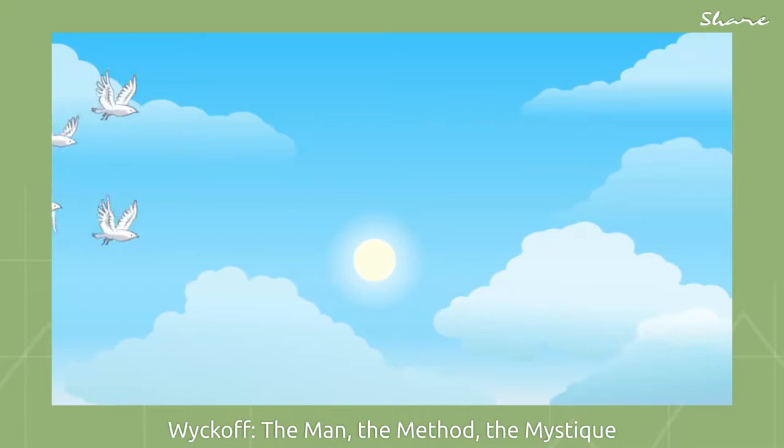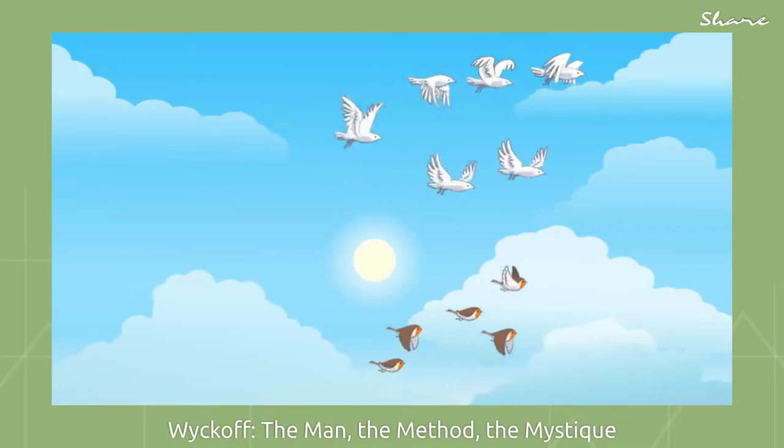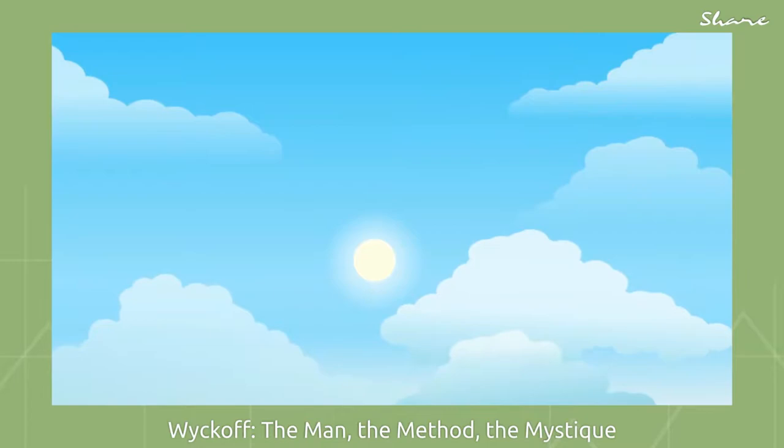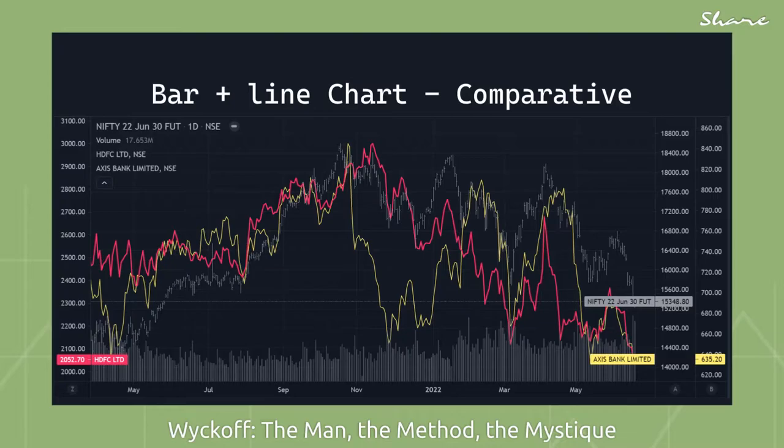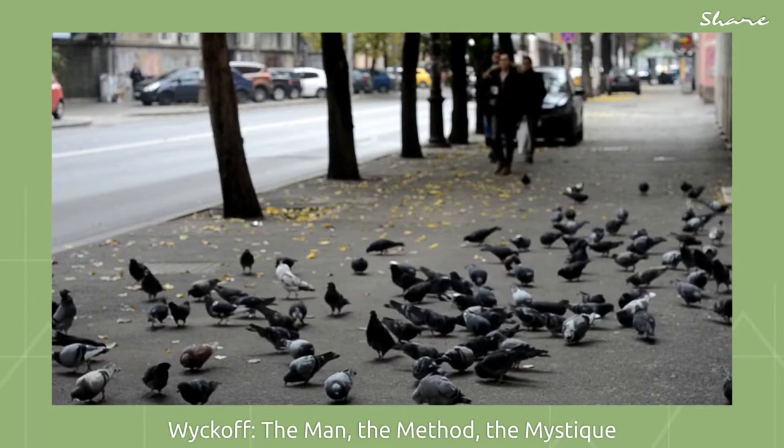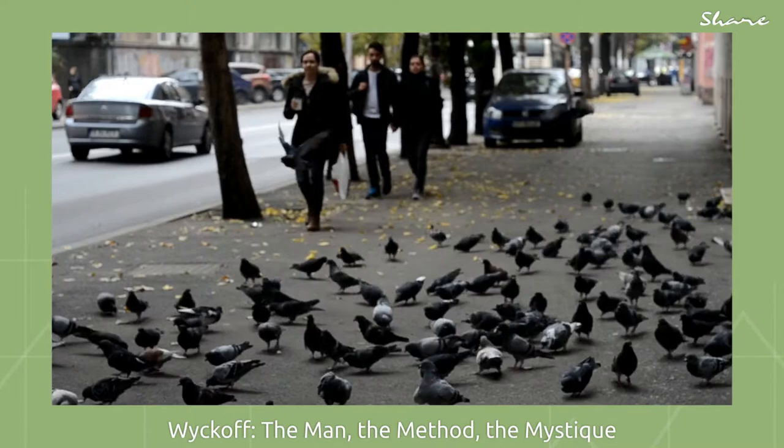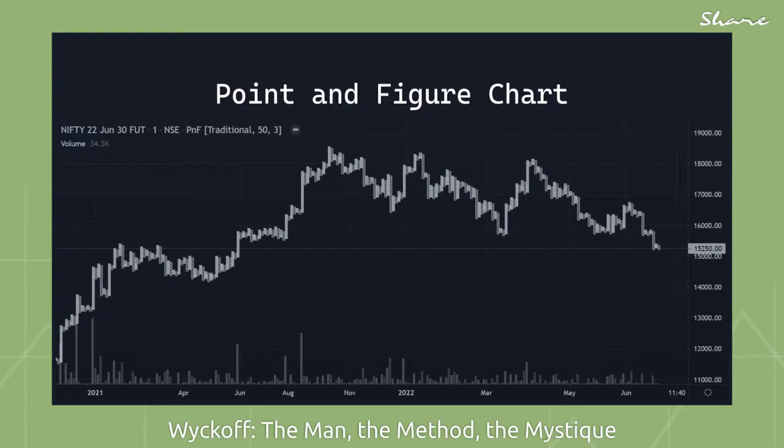Step 2: Select stocks in harmony with the trend. If you are playing the game long, select stocks which you believe are stronger than the market. If you are not sure about an individual issue, drop it. Use bar charts of individual stocks. Step 3: Select stocks with a cost that equals or exceeds the minimum objective. Choose stocks that are under accumulation or re-accumulation. Use point and figure charts of individual stocks.